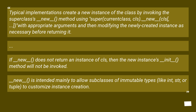To quote the documentation: typical implementations create a new instance of the class by invoking the superclass's __new__ method using super(CurrentClass, cls).__new__(cls) with appropriate arguments, and then modifying the newly created instance as necessary before returning it. If __new__ does not return an instance of cls, then the new instance's __init__ method will not be invoked. __new__ is intended mainly to allow subclasses of immutable types like int, str, or tuple to customize instance creation.